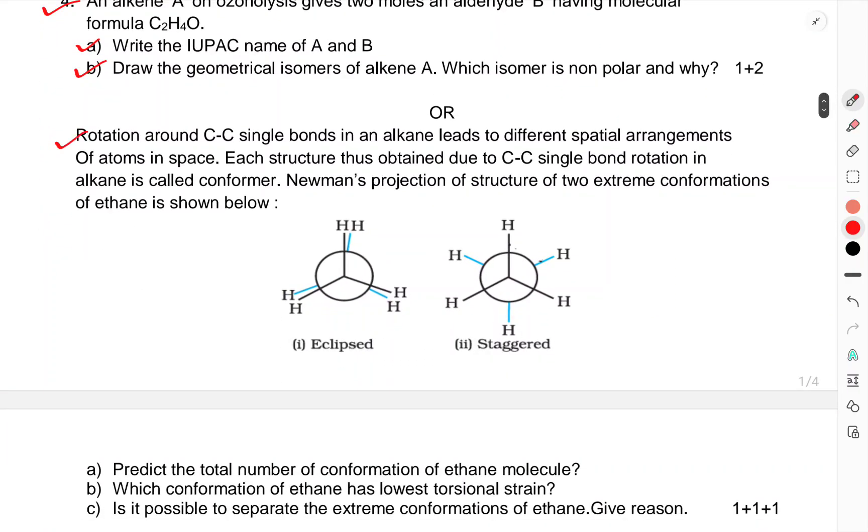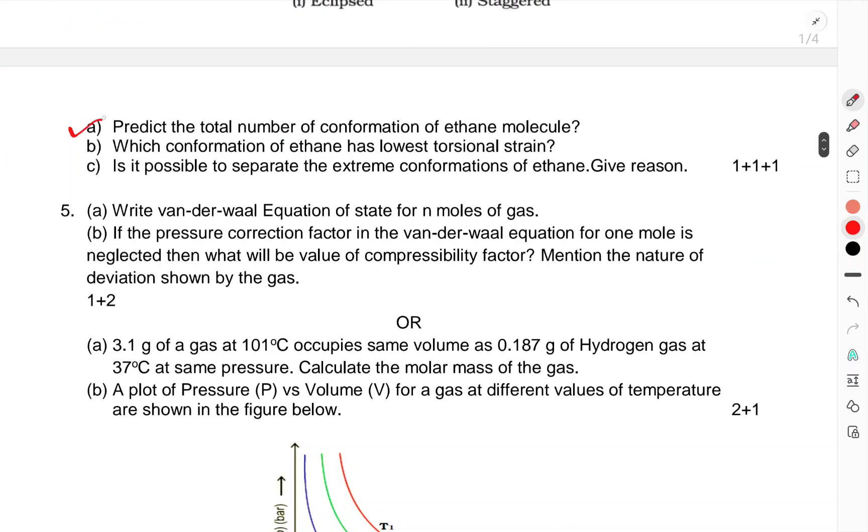Draw the geometrical isomers of alkene A. Which isomer is non-polar and why? OR: Rotation around C-C single bond in alkane leads to different spatial arrangements of atoms in space. Each structure obtained due to C-C single bond rotation in alkane is called conformer. Newman's projection of the structure of two extreme conformations of ethane is shown below. Predict the total number of conformations of ethane molecule. Which conformation of ethane has lowest torsional strain? Is it possible to separate the extreme conformations of ethane? Give reasons.